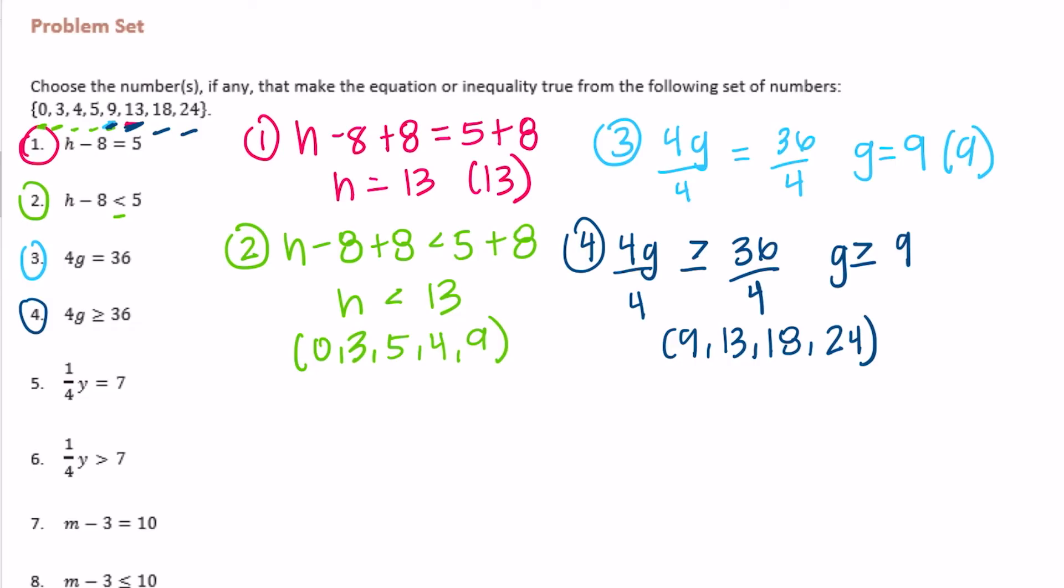Number 5: one-fourth of y. Instead of doing one-fourth times y, I'll multiply by 4 to get y alone, because that would make 1 equals 7 times 4. So y needs to equal 28. Do we have a 28? No. So none make this true.